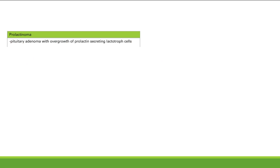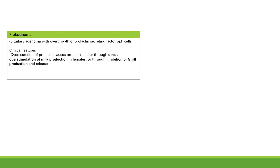The symptoms of a prolactinoma: you either get direct overstimulation of milk production in females — that's galactorrhea — or you get inhibition of GnRH release. In women that means decreased estrogen, amenorrhea, decreased follicle stimulation, and decreased bone density. In males, you get infertility, hypogonadism, impotence, and decreased libido — all from decreased testosterone.